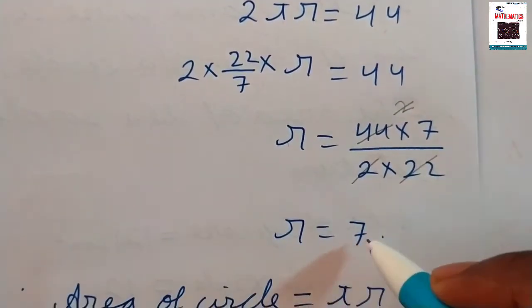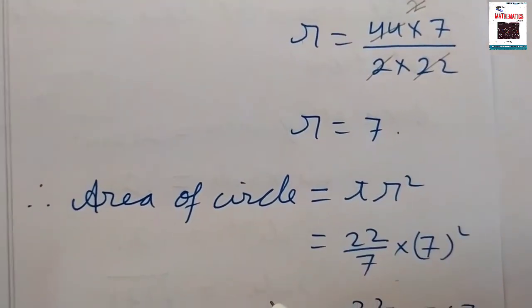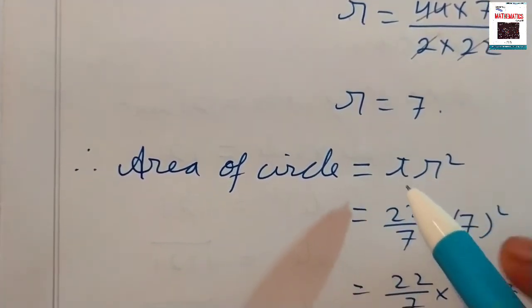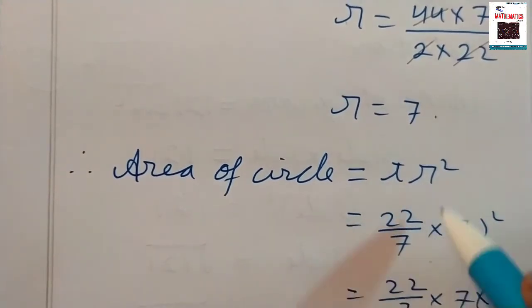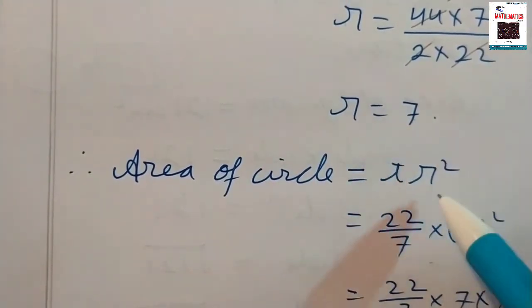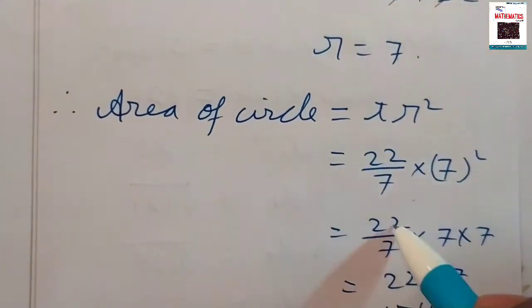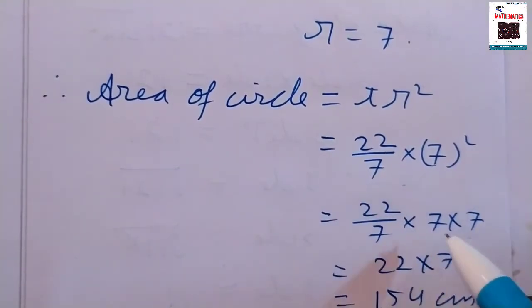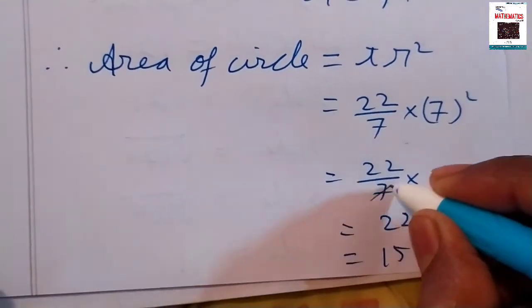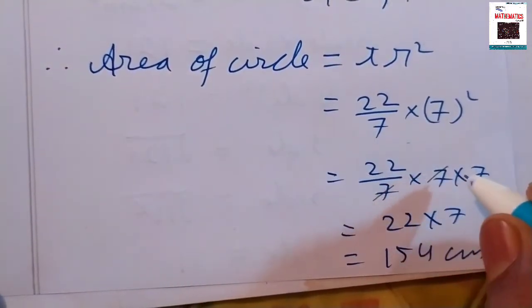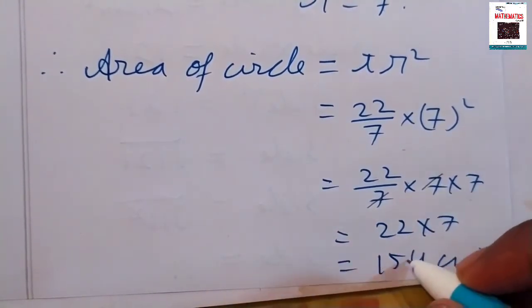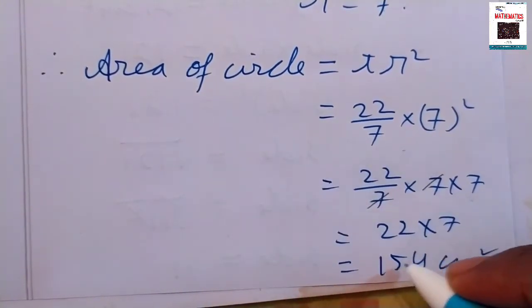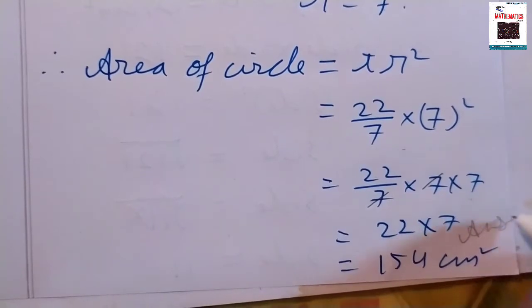Now we find the area of the circle using the radius. Area of circle equals πr². Calculating this gives us 154 cm square. This is our answer for the first question.